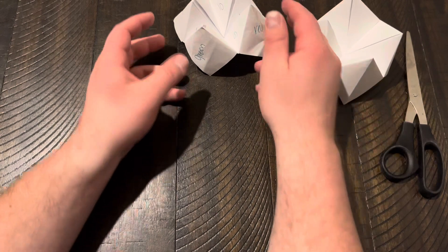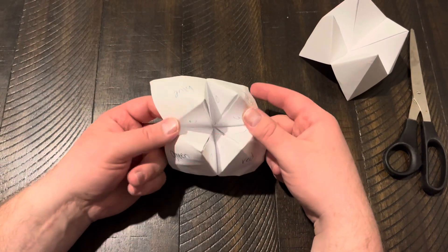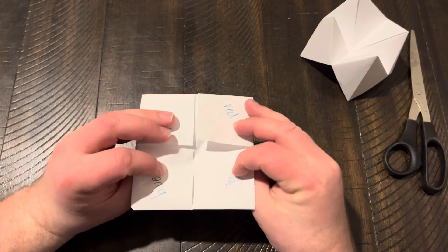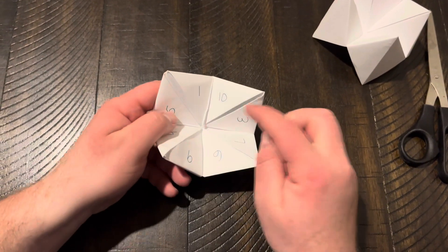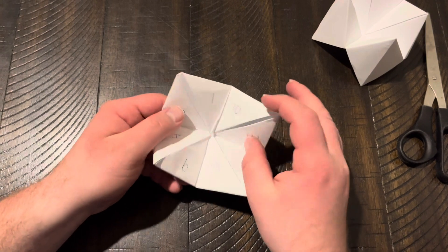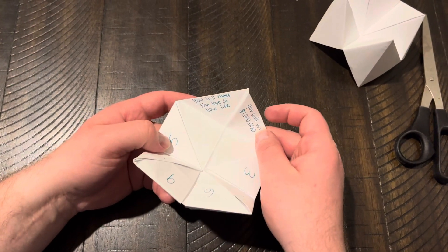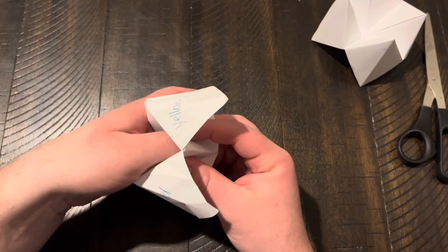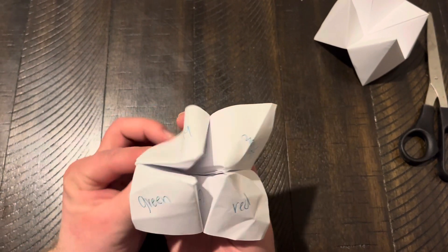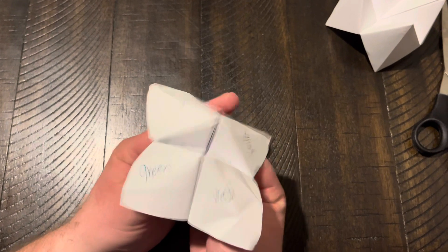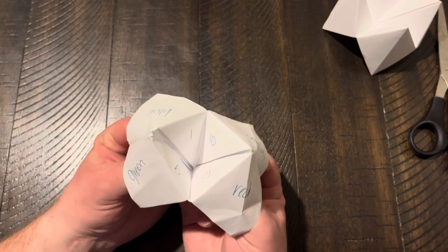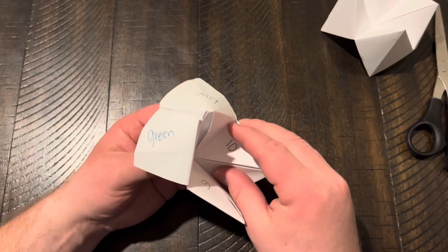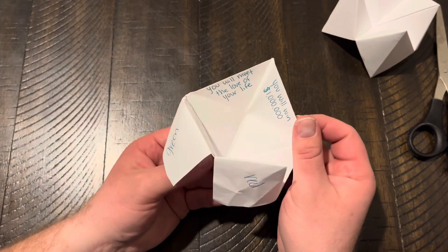Now the fun part is actually writing the fortunes, right? So generally, you wanna write colors on these flaps. Numbers on the inside with fortunes under each number. So that you can start doing it. You can have them pick a color, you spell out that color. Have them pick a number, do that number. And then fold up the fortune to reveal what it is.